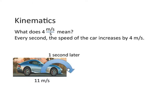And so imagine we have this car initially moving at 11 meters per second. Every second, the speed of the car increases by 4 meters per second. So what does that mean? One second later, what would the new speed of the car actually be? Without using any formula. Just by using this simple understanding that every second, the speed of the car increases by 4 meters per second. Well, one second later, it would be 15. 11 plus 4. And another second later, what would it be? 19.